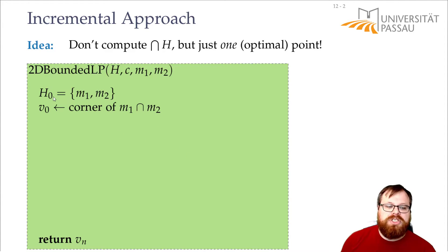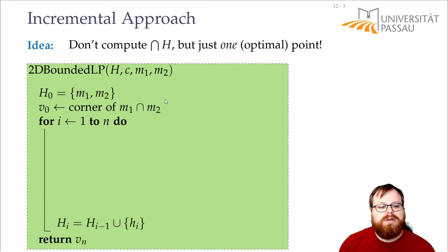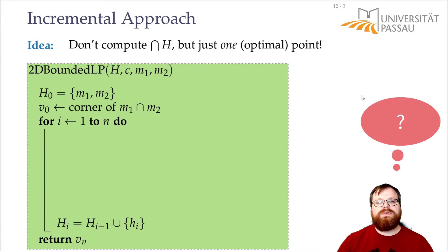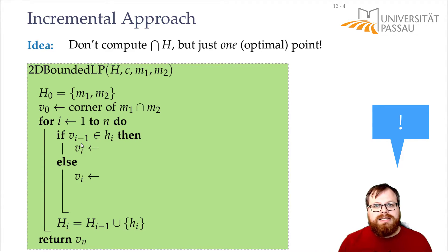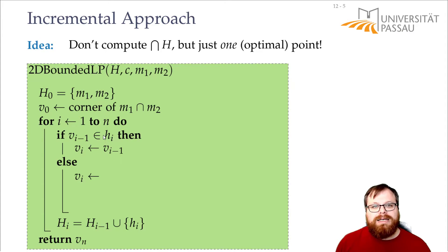In H0 we have the first two half planes M1 and M2, and in HI we store what half planes we are looking at right now. Now let's assume we add the next half plane HI — say H1 in the very beginning. We update our set H. Either the optimum changes or it does not. How do we figure out if the optimum changes after adding HI? That's very easy: if the previous optimum lies in the half plane we add, it's still the optimum — there was no better point before, and after removing some region, there still cannot be a better point. But if it does not lie in the half plane, we have to find a new optimum.